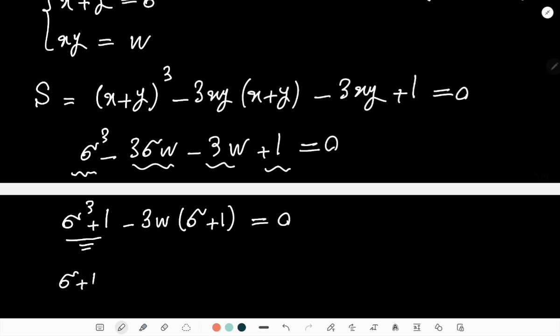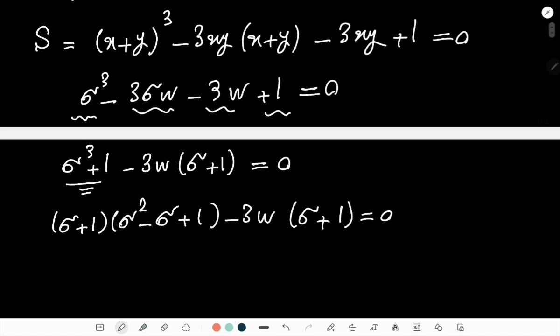So I have (σ + 1)(σ² - σ + 1) - 3w(σ + 1) = 0. And I'm just going to factorize this based on σ + 1, and then this gives me (σ + 1)(σ² - σ + 1 - 3w) = 0.